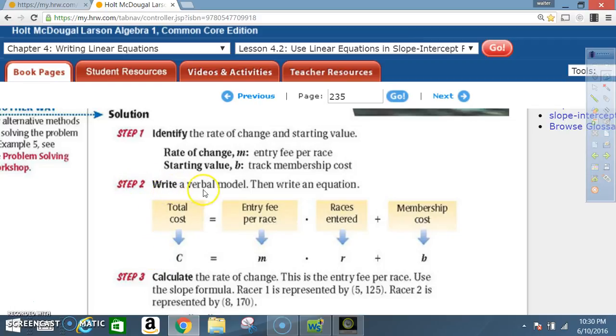Step 2. Write a verbal model, then write an equation. Total cost C equals the entry fee per race, M, times races entered, R, plus membership cost, B.